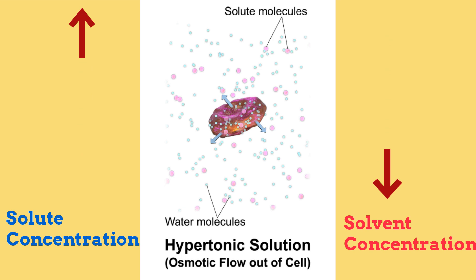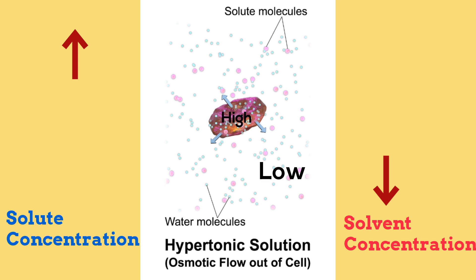So, water will flow from high to low. There's a higher concentration of water inside the cell than outside the cell, because water is the solvent, so the water flows out, causing the cell to get smaller.